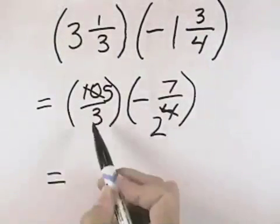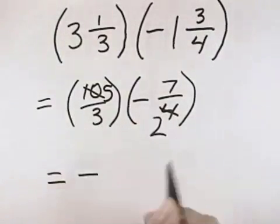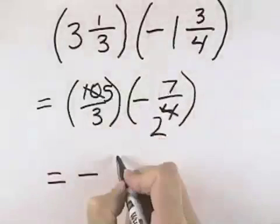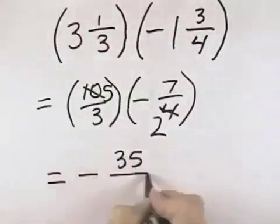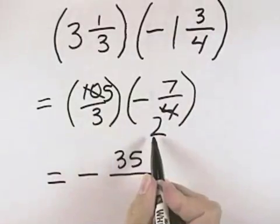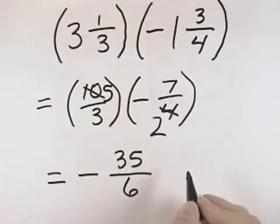So that when we multiply, we have a positive times a negative, which is negative. 5 times 7 is 35, and 3 times 2 for the denominators is 6. So we can write this as negative 35 over 6.